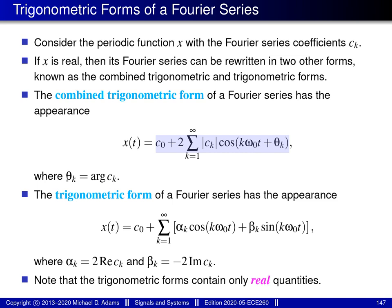In the combined trigonometric form, all quantities in the expression are real valued. C_0 is always real for a real-valued function, the magnitude of the coefficient is real, and cosine is a real-valued function — so the Fourier series is expressed in terms of exclusively real arithmetic, which is sometimes convenient. This form arises by grouping pairs of terms in the exponential Fourier series into cosine functions, which is possible because the coefficients are conjugate symmetric.